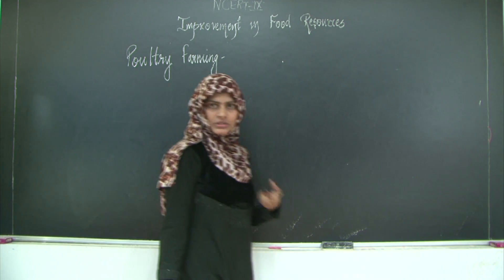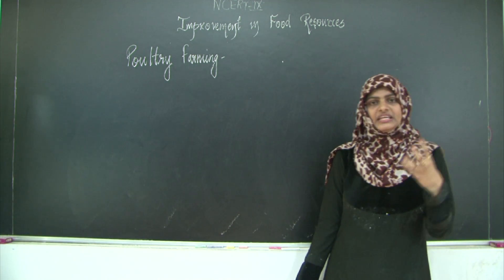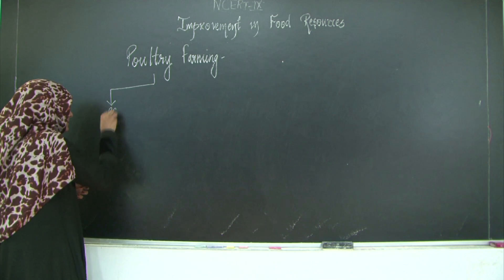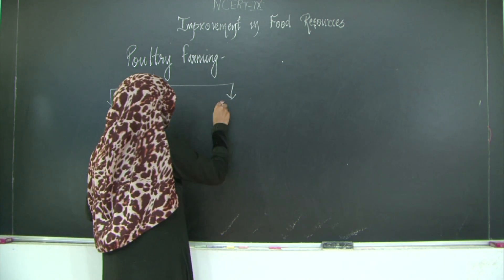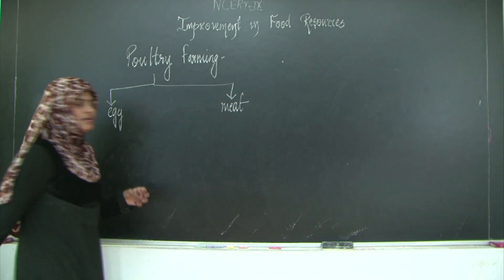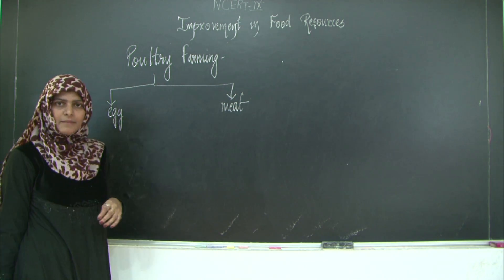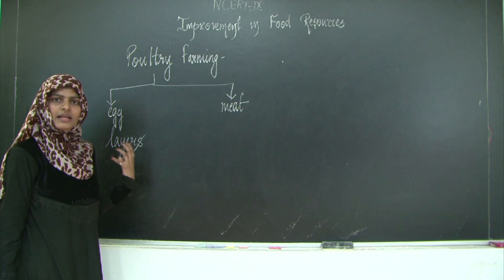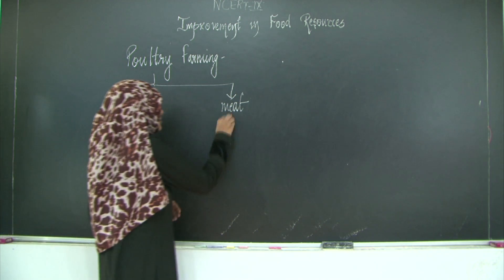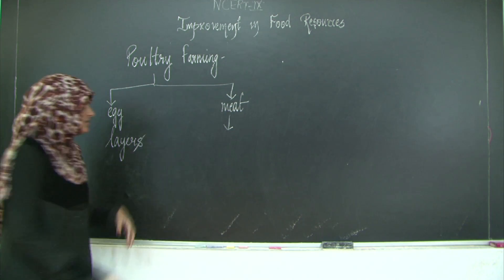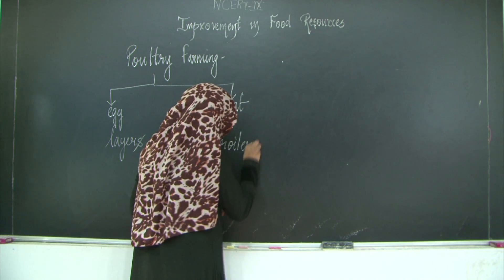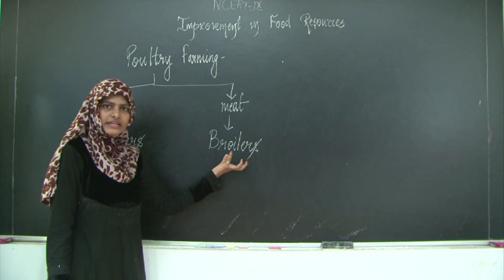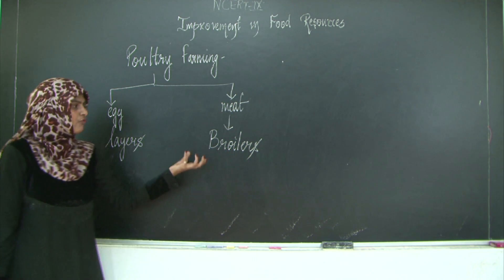Poultry can be done for two things — we eat the egg and we eat the meat. So poultry farming can be done either for getting eggs or for getting meat. If we are doing poultry farming for getting eggs, we call such poultry as layers — they lay the eggs. The ones for which we do poultry farming for meat, we call them as broilers.